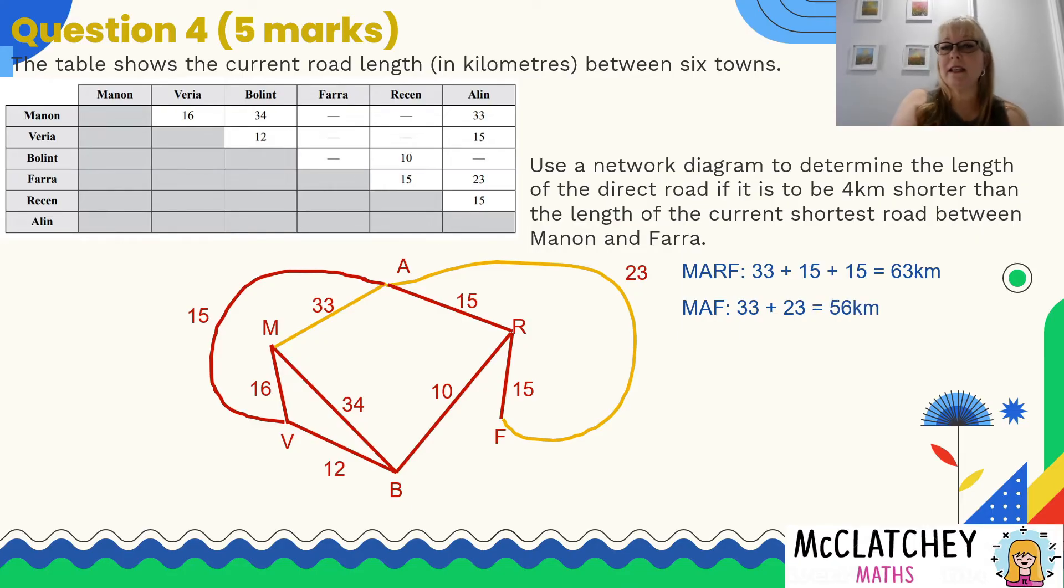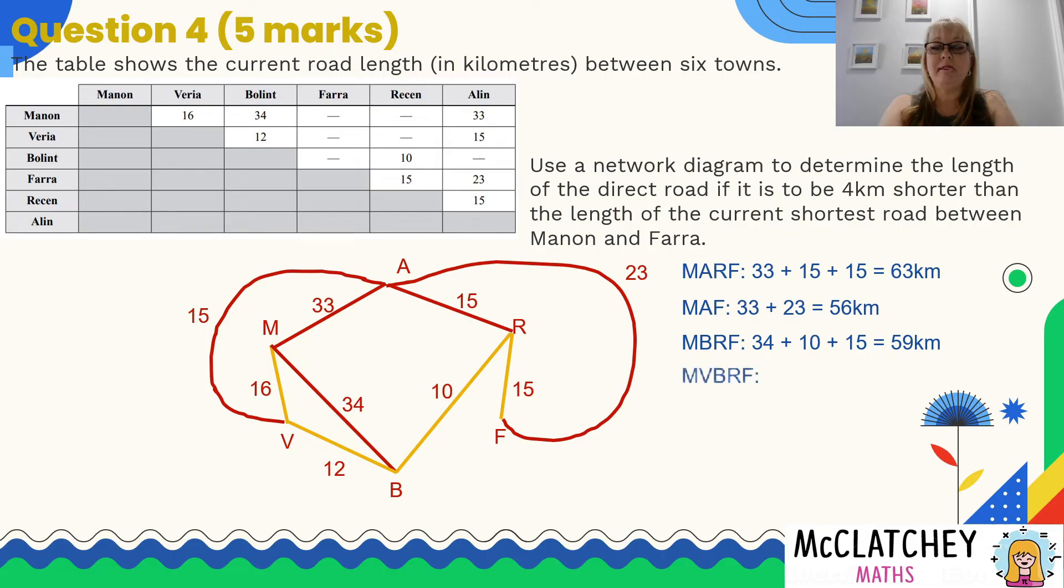So you can see I've already found it looked like a longer way just visually because it's not a scale drawing, but it's actually shorter. Let's find another pathway: M-B-R-F. This time I've got 34 plus 10 plus 15, that's going to give me a total of 59 kilometers, a bit longer, not really the ideal pathway. And I've got another one: M-V-B-R-F, even longer this time. 16 plus 12 plus 10 plus 15 actually is 53 kilometers. I found an even shorter way. That's why you need to try all the different possibilities. That's our quickest way through the network.